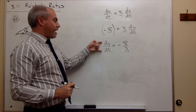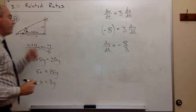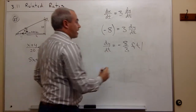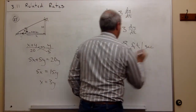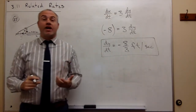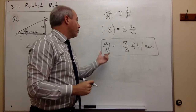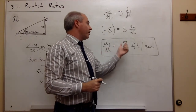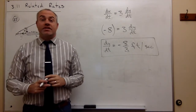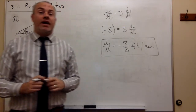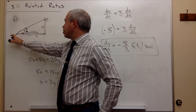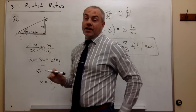Adding units: y is measured in feet and t in seconds, so the answer is that the shadow is decreasing at a rate of negative 8/3 feet per second. Now there's a second part to this problem: how fast is the tip of the shadow moving towards the streetlight?